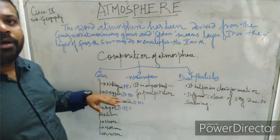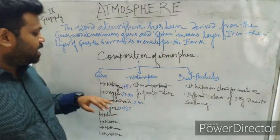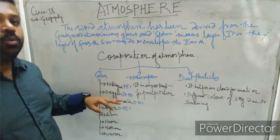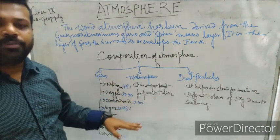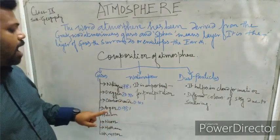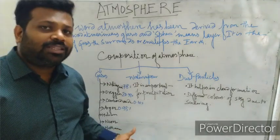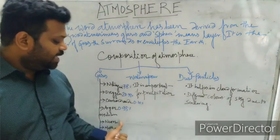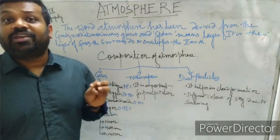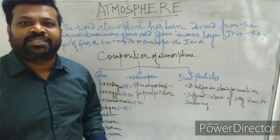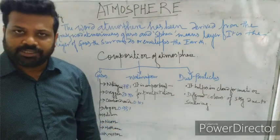Nitrogen is present in the maximum amount — about 78%. Oxygen is 20.90%, carbon dioxide is 0.01%, argon is 0.90%. All other gases are found in very little amount, in traces, which is why their percentages are not mentioned.